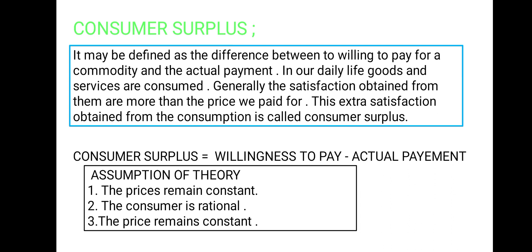Now our next topic is consumer surplus. Consumer surplus may be defined as the difference between willingness to pay for a commodity and the actual payment. For example: you go to a shop to buy a phone. You were willing to pay 20,000 rupees for the phone. But when you actually buy it, the phone costs only 15,000 rupees. So your consumer surplus is 20,000 minus 15,000 equals 5,000 rupees.